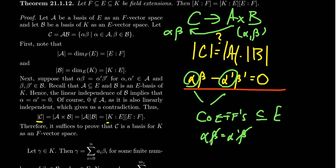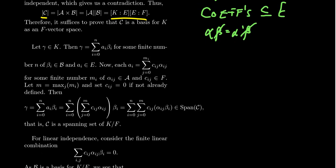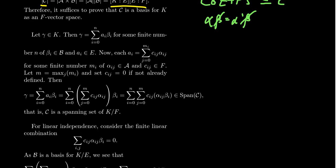Because of this cardinality result, to prove our equation we have to prove that C is a basis for K over F — because if C is a basis, then its size is the dimension of the vector space K over F, which is exactly what the degree [K:F] measures. We will now proceed to show that C is in fact a basis for K over F. Take an arbitrary element γ inside K.